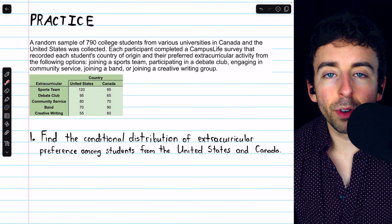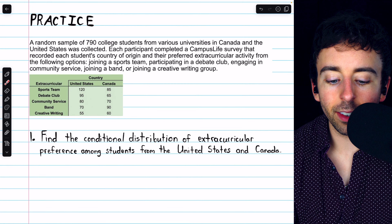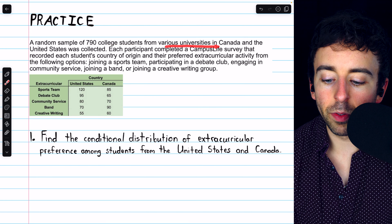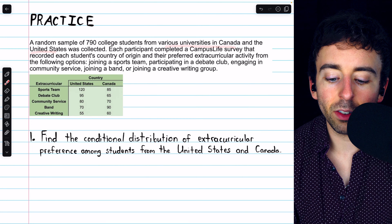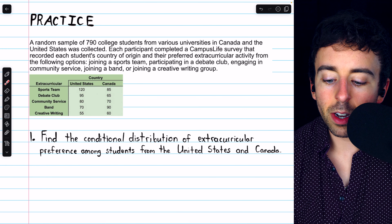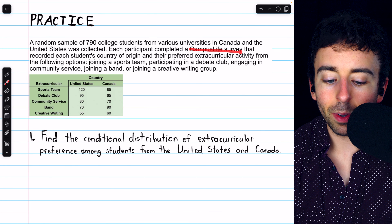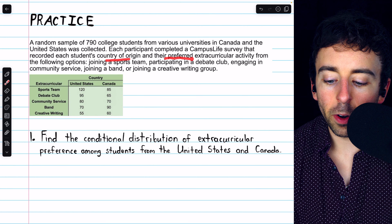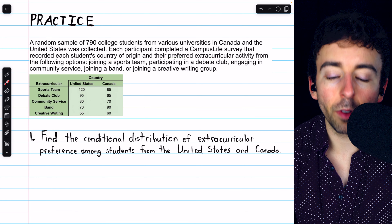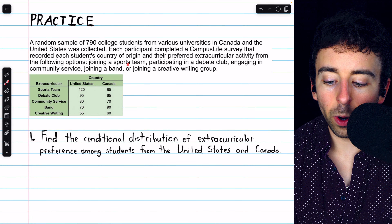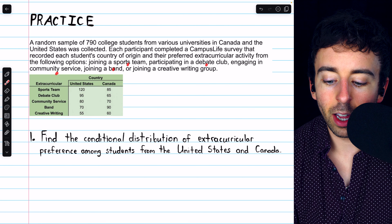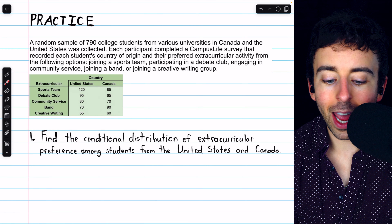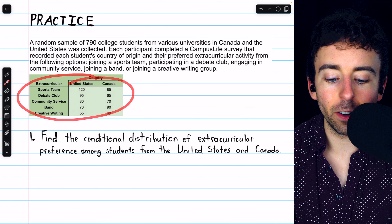Let's revisit a previous situation for some more practice. A random sample of 790 college students from various universities in Canada and the United States was collected. Each participant completed a campus life survey that recorded the student's country of origin and their preferred extracurricular activity from the following options: sports, debate, community service, band, or a creative writing group. And the data are summarized here.